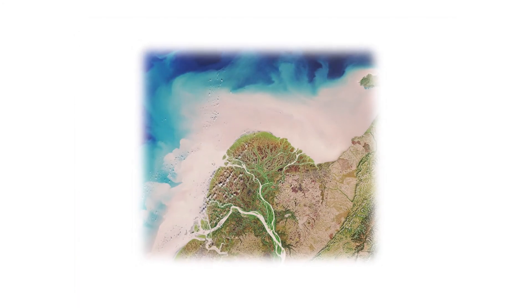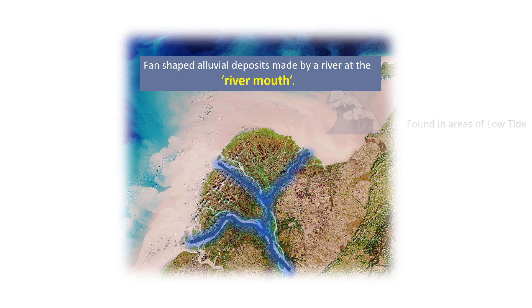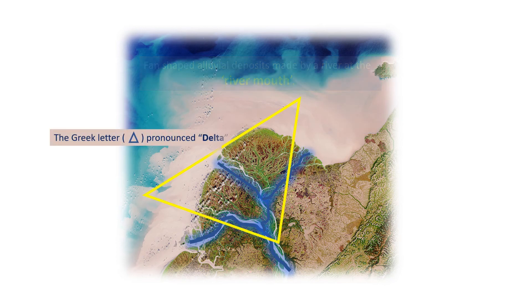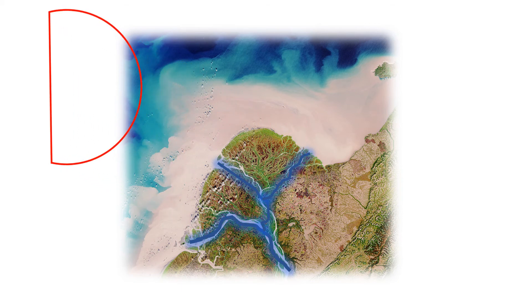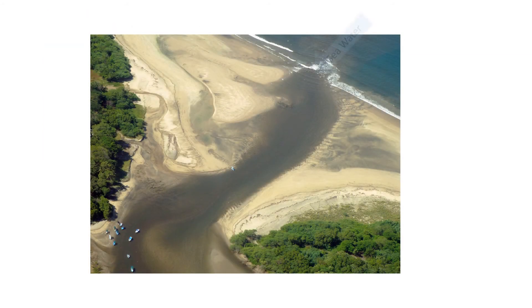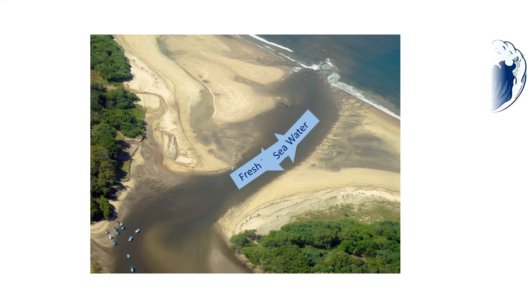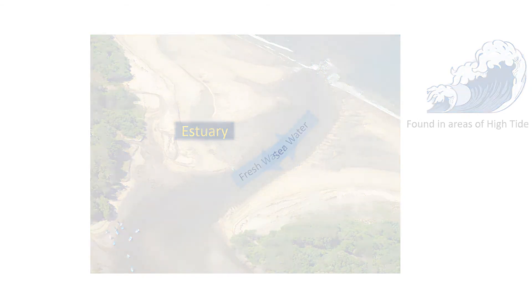A river on reaching the sea deposits alluvium at the mouth of the river. In areas of low tide, erosion by sea is usually negligible, so a fan-shaped landform becomes visible — which we call delta. At the river mouth, sea water enters into the river because of high tide, and salt water gets mixed with fresh water to form brackish water. Such a landform is called an estuary.